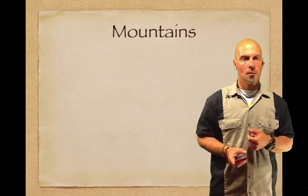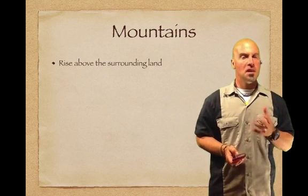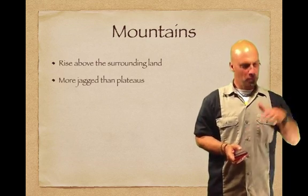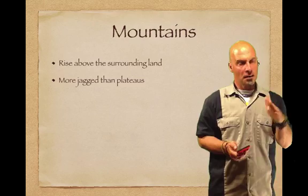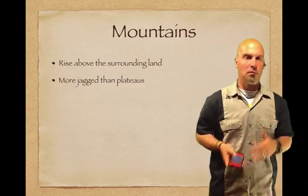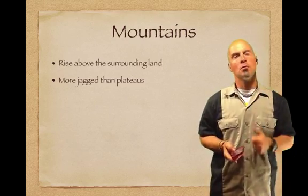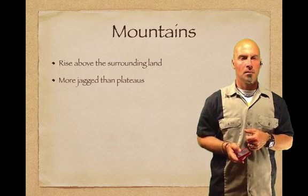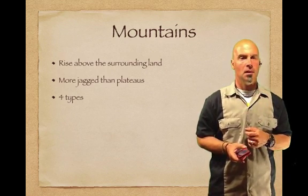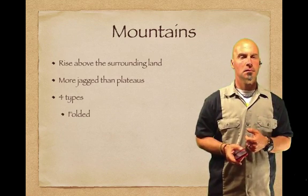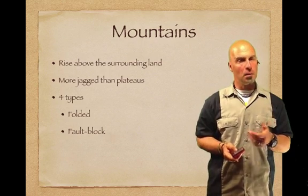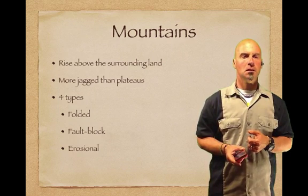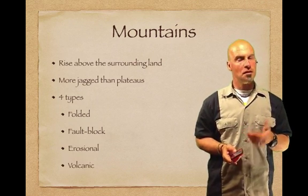Mountains rise above the surrounding land and are more jagged than plateaus. Plateaus aren't completely flat, but they're not mountain-pointy either. Mountains are more jagged even though both rise above surrounding land. There are four types of mountains: folded mountains, fault block mountains, erosional mountains, and volcanic mountains.